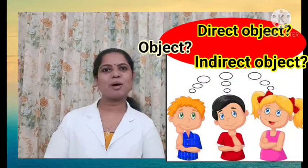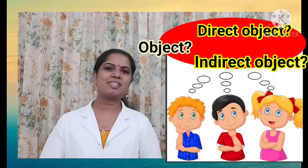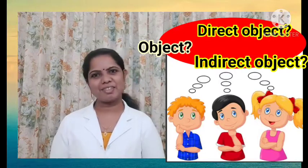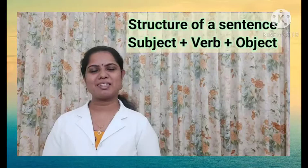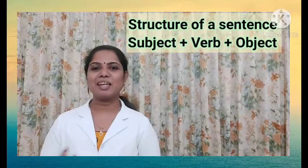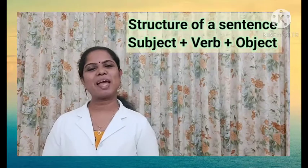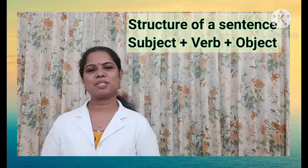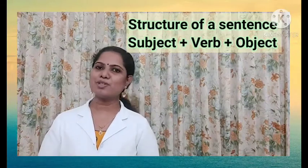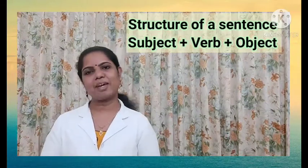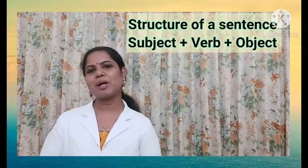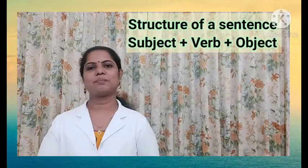So let's move to our topic: object and its types — direct and indirect object. Children, the basic structure of a sentence is: it has a subject, it has a verb, and an object. Subject plus verb plus object forms a sentence, and most sentences have a subject and a verb, while some sentences also contain objects with them.